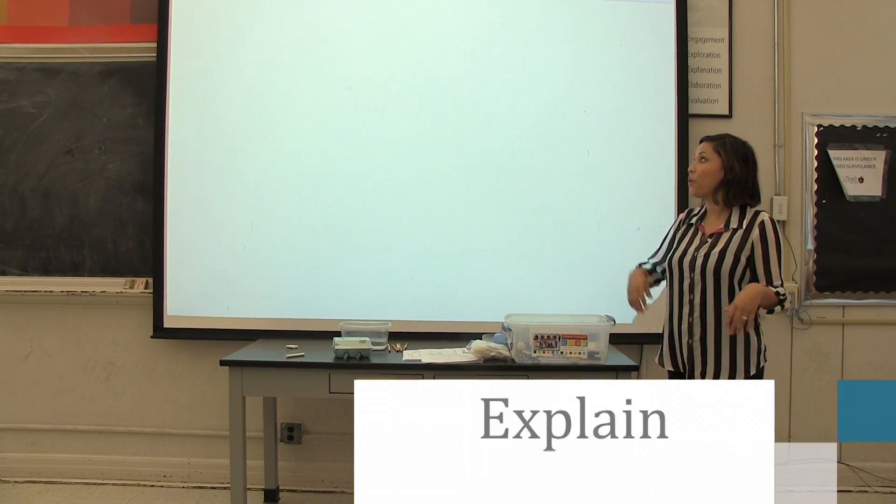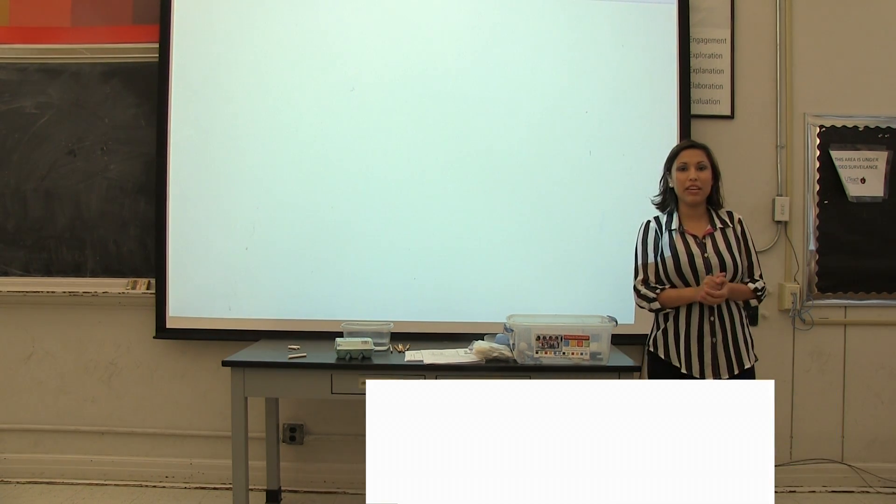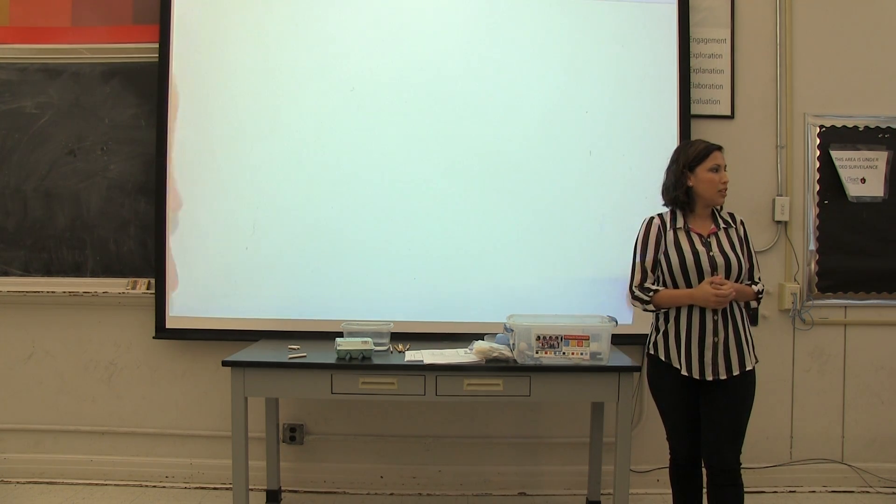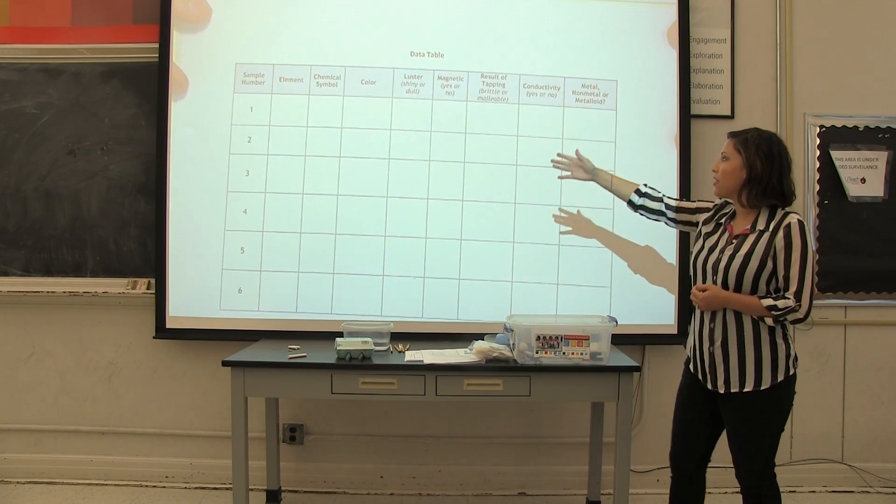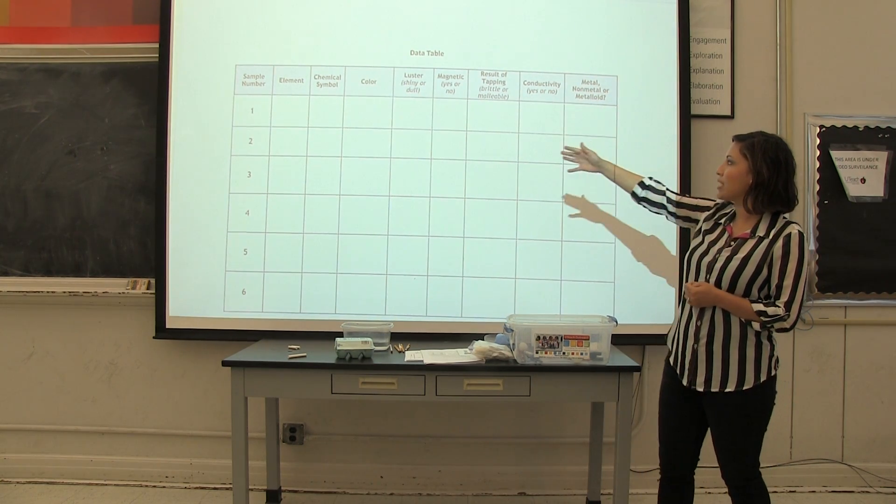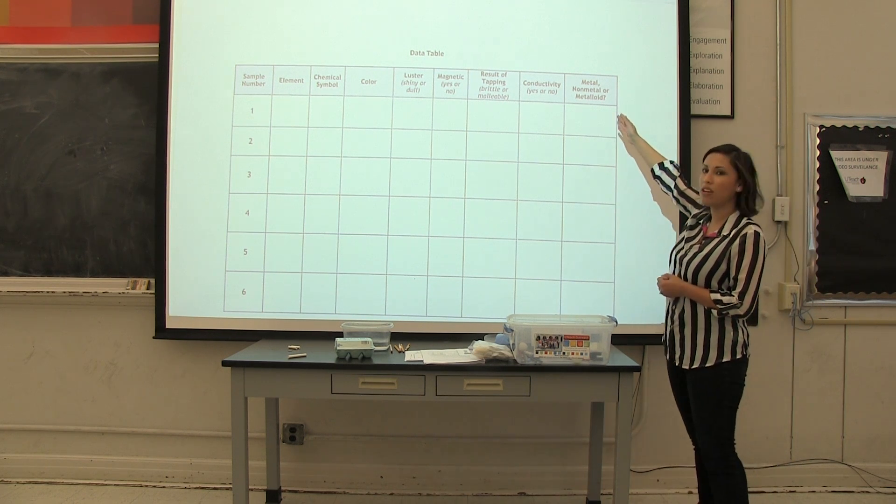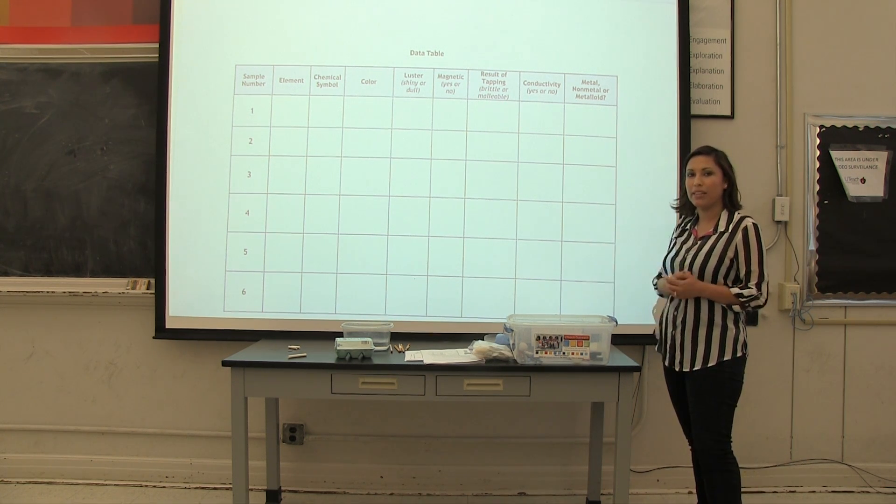All right, so we're going to go ahead and pass out your worksheets that are going to show you, it's for your data table, so you can add all your data that you observe for your examples. So you're going to write down what element you have, and then you're going to go ahead and do the different testing or the observations that we went over. This last column, we're going to go over that in just a bit, so you can go ahead and leave that column blank.